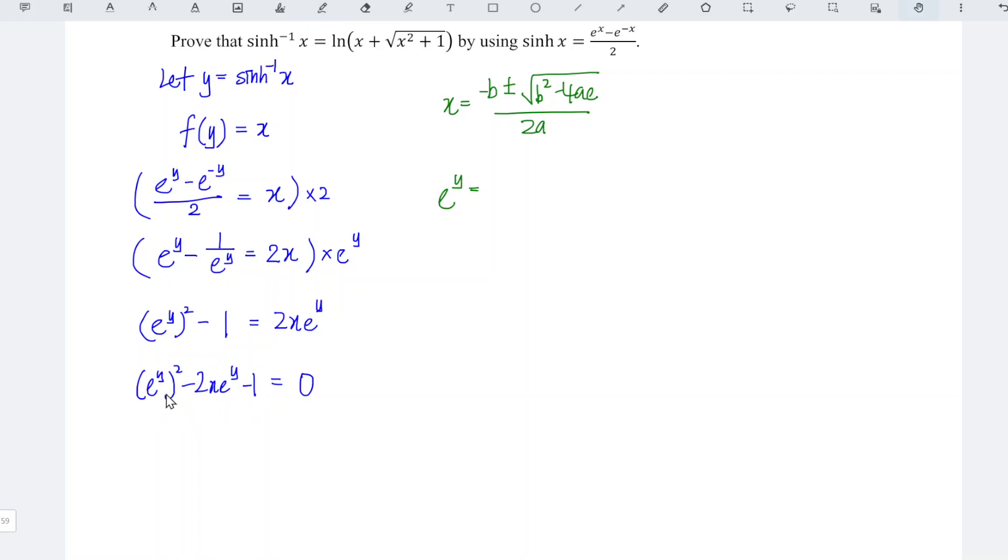So which means that the unknown for this case is e^y instead of x and we just have to obtain a, b, c accordingly. So a is equal to 1, b is equal to negative 2x, and c is equal to negative 1.